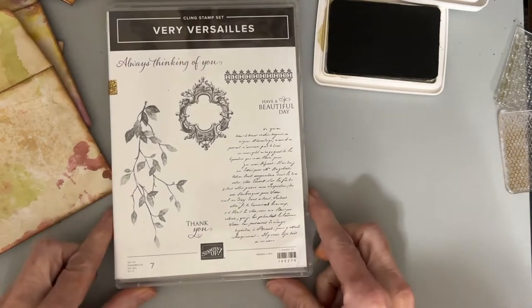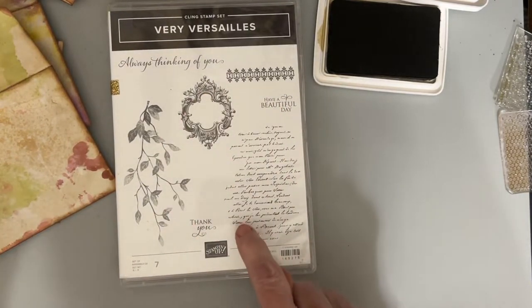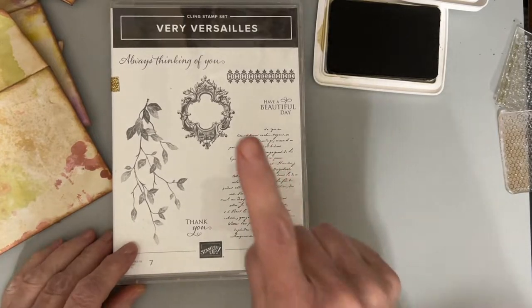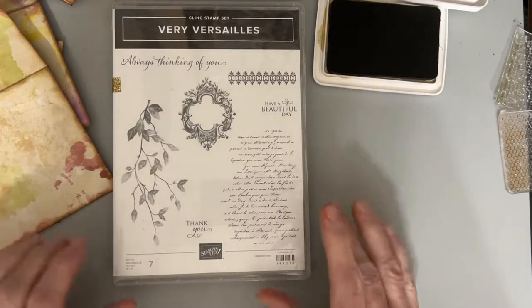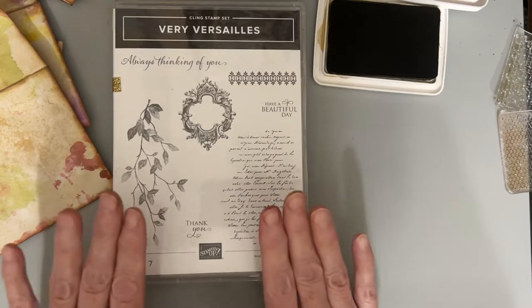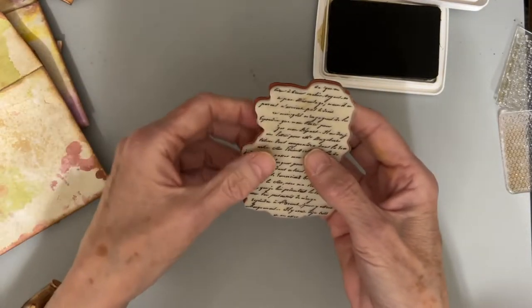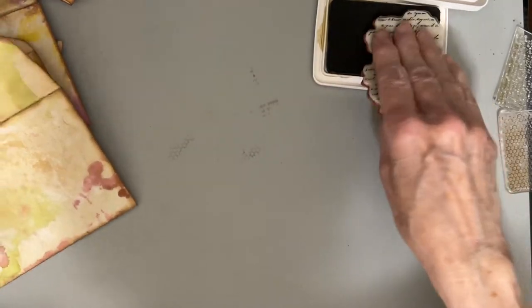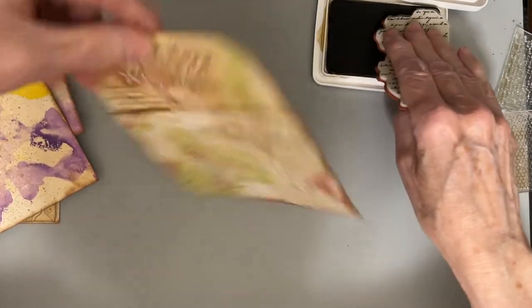And then, of course, my all-time favorite stamp set, Very Versailles. Now, the new catalog is coming out and this is retiring. I'm telling you guys, if you're journal makers, card makers, this is my all-time favorite stamp for vintage looks. So let's just use a little bit of this script. Isn't that just gorgeous?